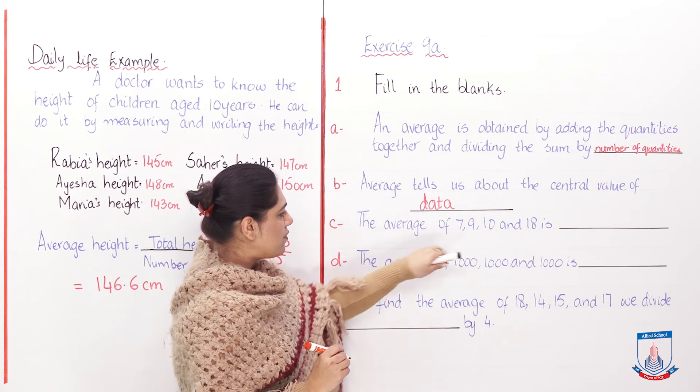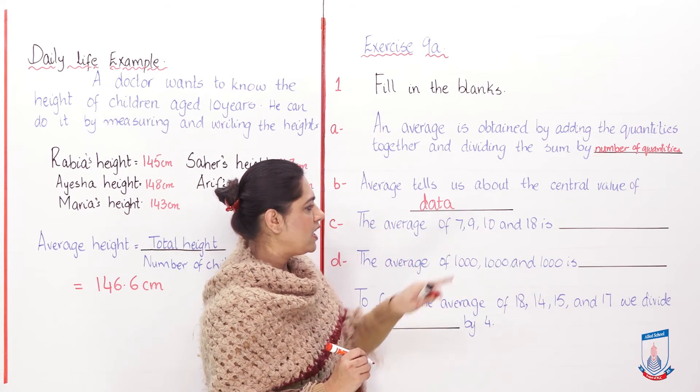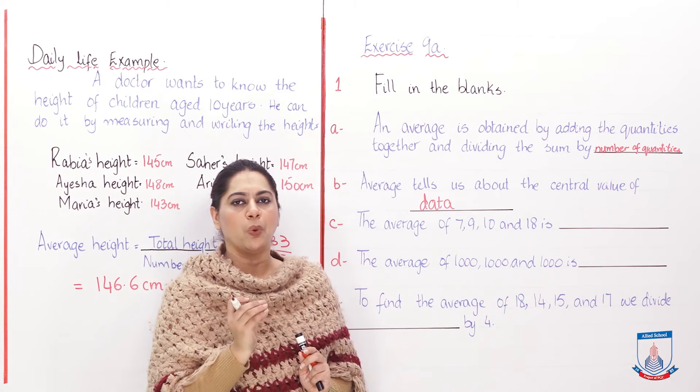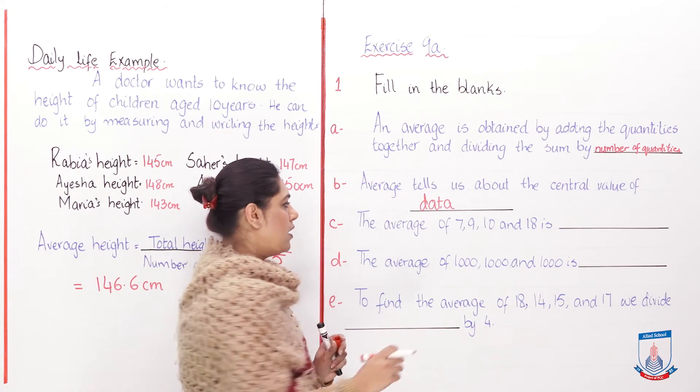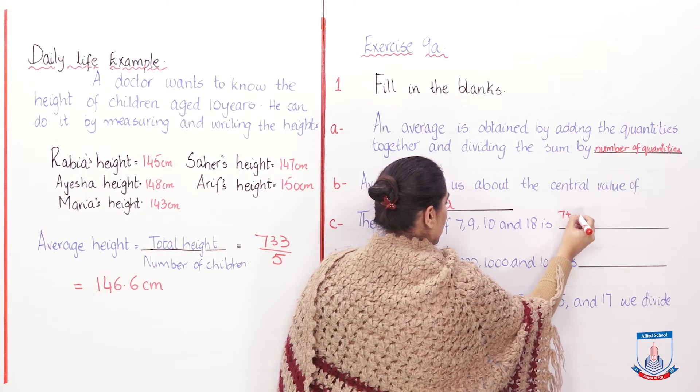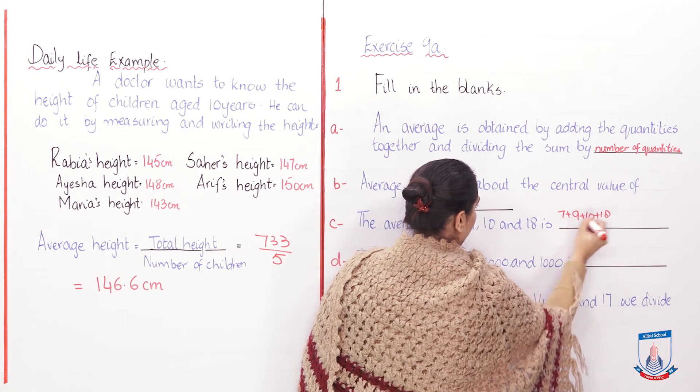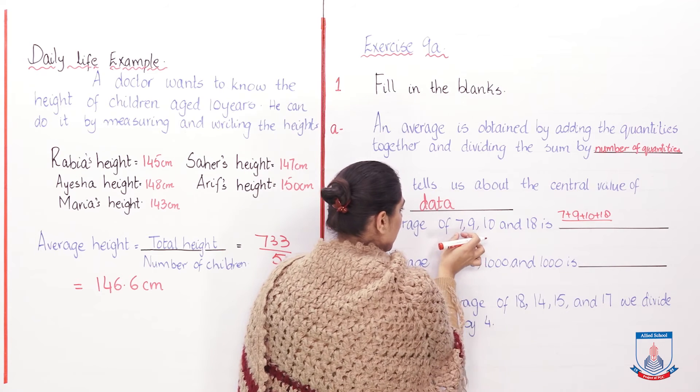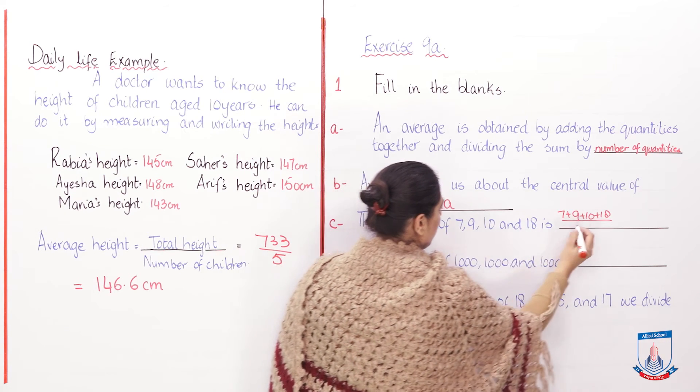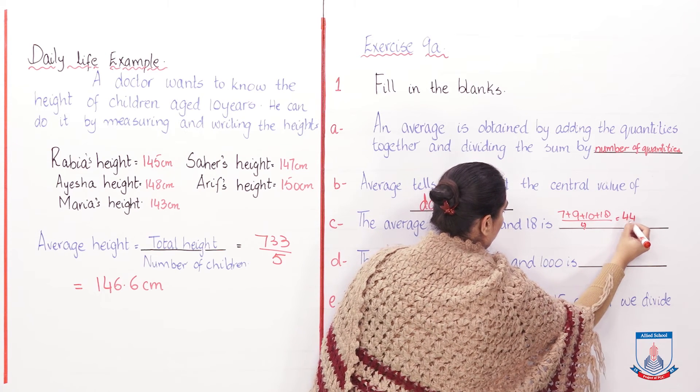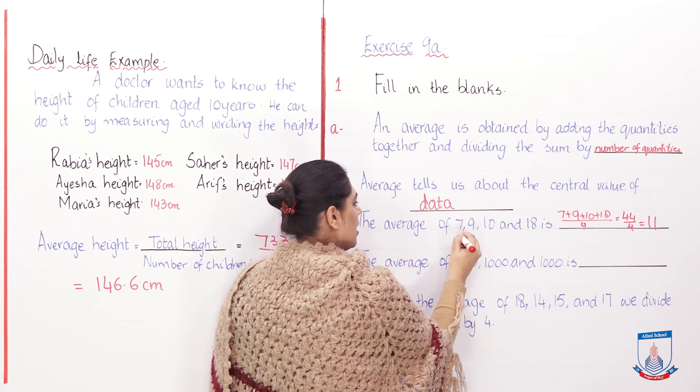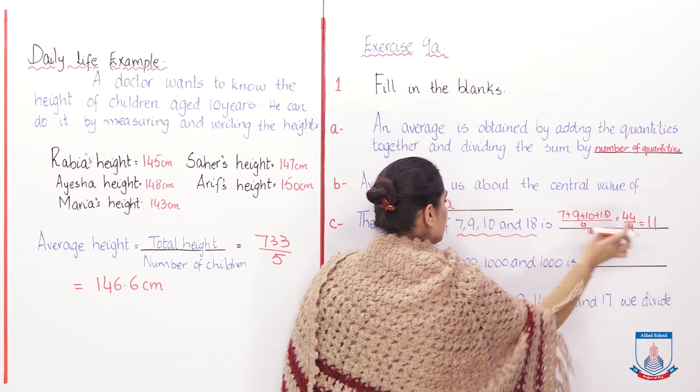Now, the average of 7, 9, 10, and 18 is what? Exactly, we will put this in the average formula and then we are going to find out its answer. When you total these, which is 7 plus 9 plus 10 and plus 18, and divide by how many quantities do I have? 1, 2, 3, 4. So you will get the answer: 44 divided by 4, which will give you 11. So the average of these numbers is 11.